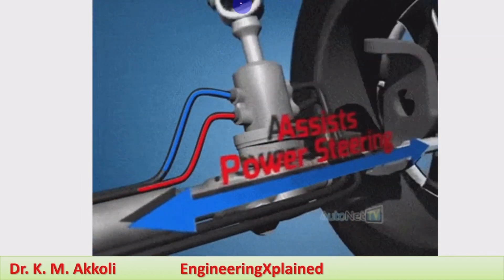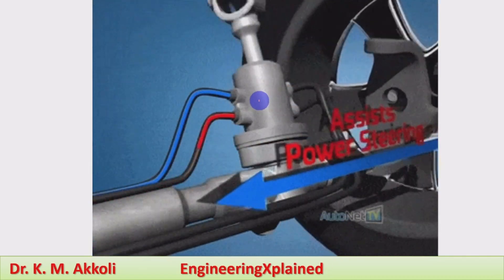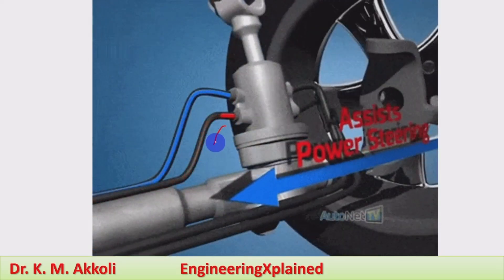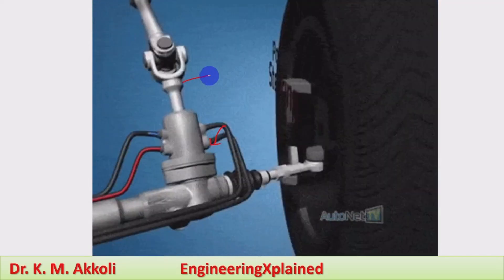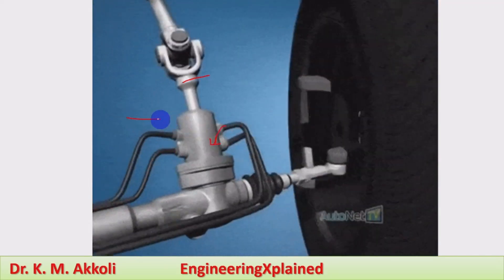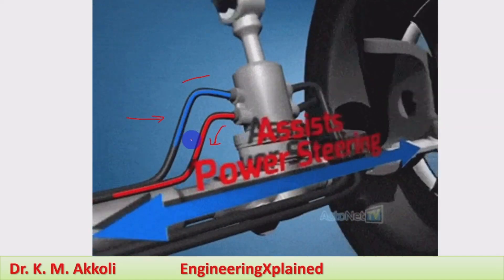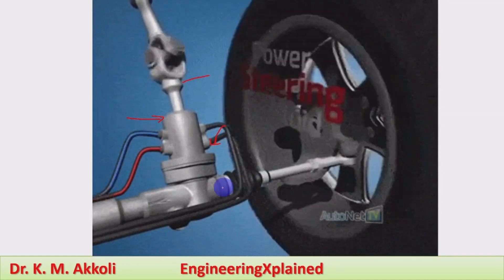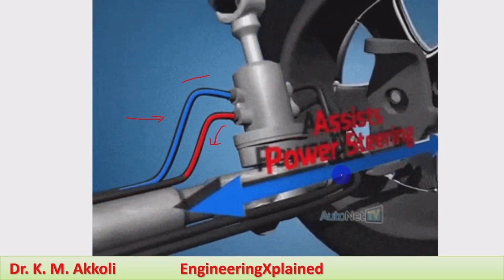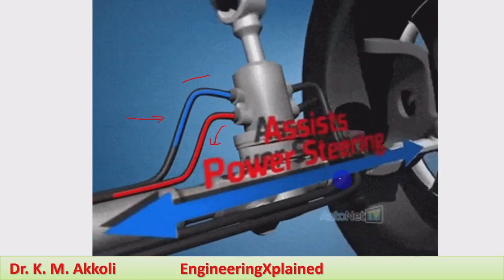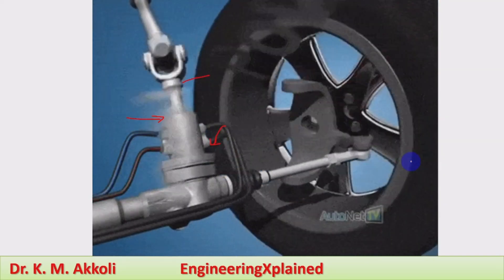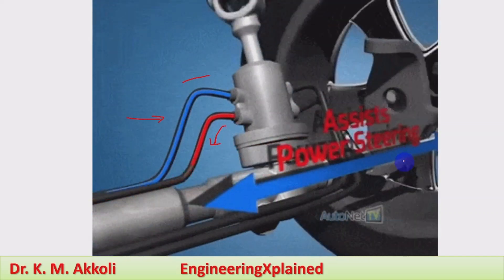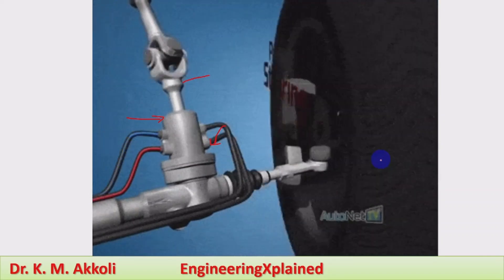Here the steering wheel is connected to this rotary valve. The direction of fluid flow can be seen — high pressure fluid flows in this direction, and low pressure fluid flows in this direction through this line. The piston moves, and then the rack and pinion gear moves, turning the wheel of the vehicle. Like this, the power steering operates with less effort.